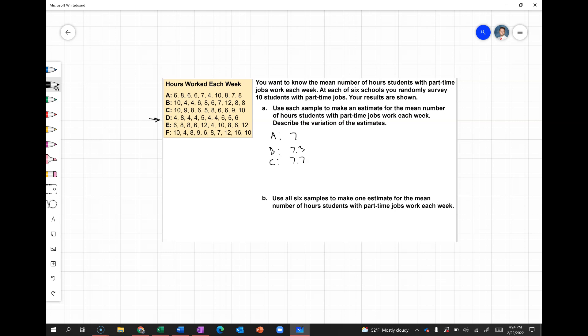Looking now at school D. 4 + 8 is 12, + 4 is 16, + 4 is 20, + 5 is 25, + 4 is 29, + 4 is 33, + 6 is 39, + 5 is 44, + 6 is 60. And dividing that by 10 is 6.